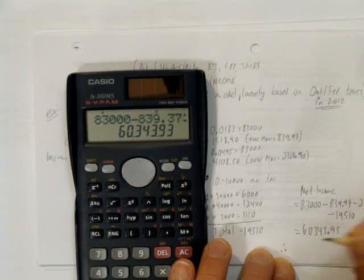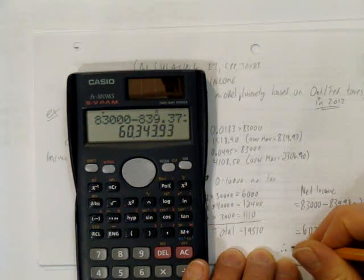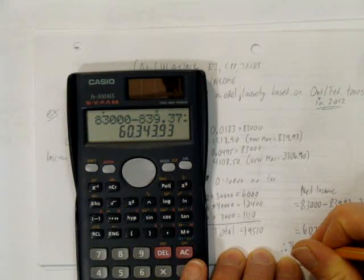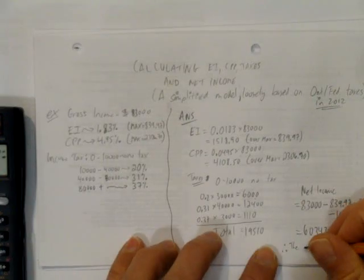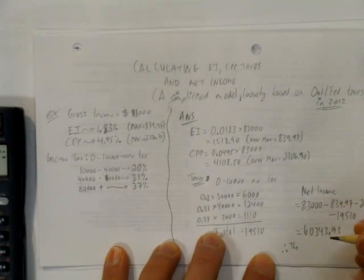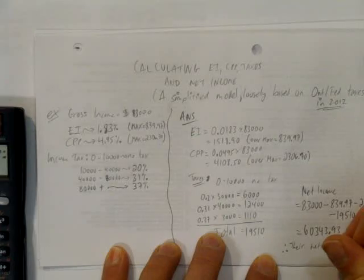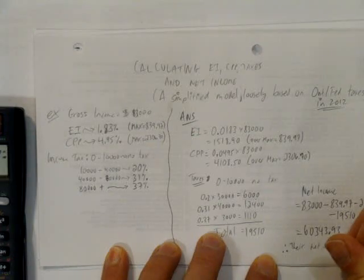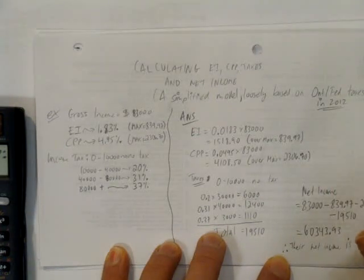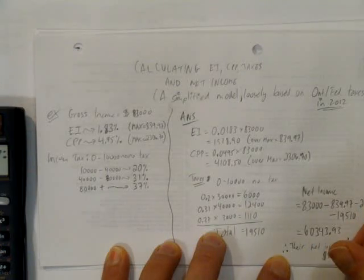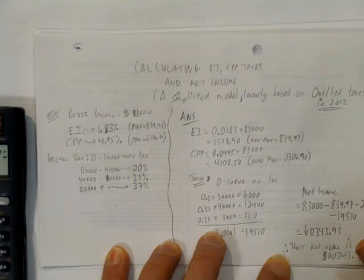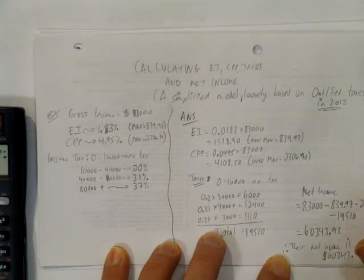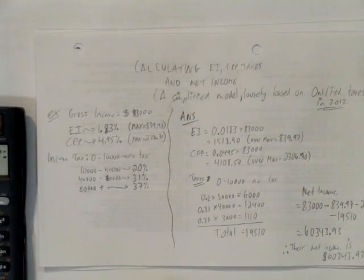Well, let's write that as a therefore statement, just because it's a word problem. And the question doesn't really ask anything specific, so I'll assume it was asking for net income. Their net income, just so I can show my final units here. Didn't show my units all along, which is okay, as long as I put it in my final answer. Their net income is $60,343.93.